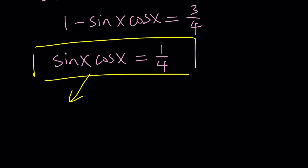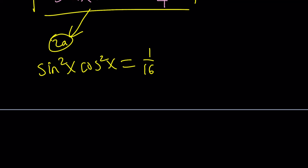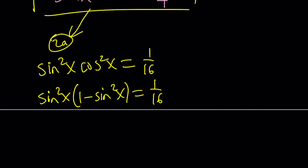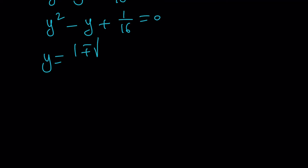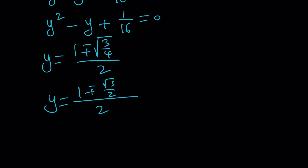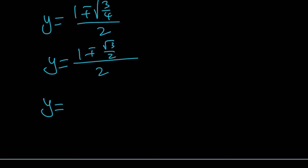First method (2a): square both sides to get sine²x cosine²x equals 1/16. Replace cosine²x with 1 minus sine²x and set sine²x equal to y. That gives y(1 minus y) equals 1/16, or y² minus y plus 1/16 equals 0. Solving the quadratic: y equals (1 plus or minus the square root of 1 minus 1/4) divided by 2, which simplifies to y equals (2 plus or minus root 3) over 4.